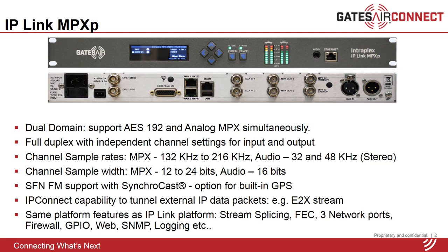Since IP-Link MPXP is built on the same platform as the other IP-Link codecs, it has similar platform-level capabilities. For instance, it supports stream splicing and forward error correction for transport reliability. Stream splicing uses duplicate packet streams that can be sent across two different networks or on the same network with programmable time offset — a very powerful technique to protect against burst losses. Forward error correction uses parity packets to recover lost packets, and the combination of both provides very scalable protection.